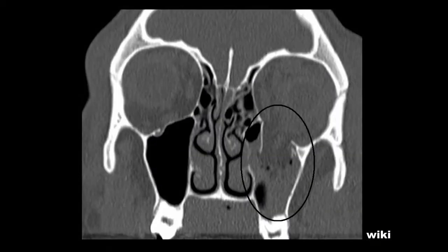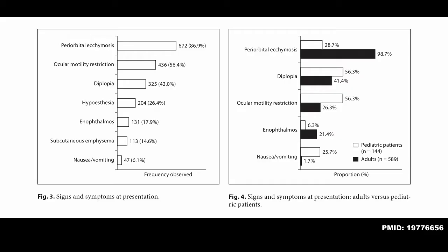Blowout fractures require careful evaluation because those muscles can get inside the maxillary sinus or ethmoid sinus and cause issues. In a retrospective review of about 700 patients who got surgery for blowout fractures, the most common findings were periorbital ecchymosis and ocular motility restriction. What's interesting is that if you look at the pediatric patients, periorbital ecchymosis was present in the minority of those kids. So that's why it's so important to actually do an examination — these pediatric patients didn't have any bruising and still had a blowout fracture. Especially in kids, make sure to evaluate those extraocular muscles really well.